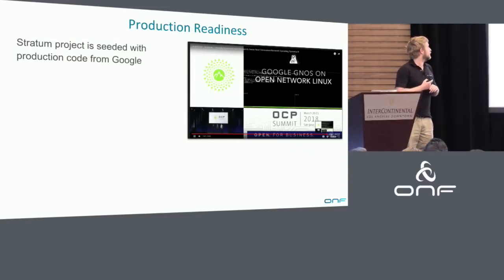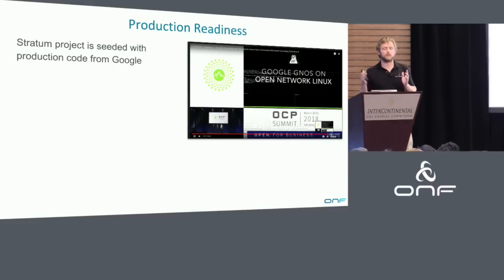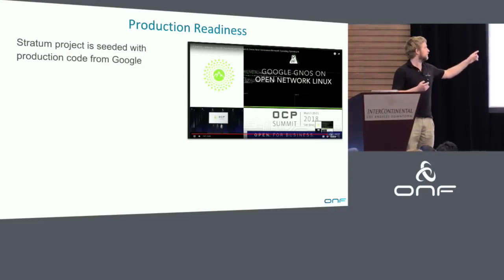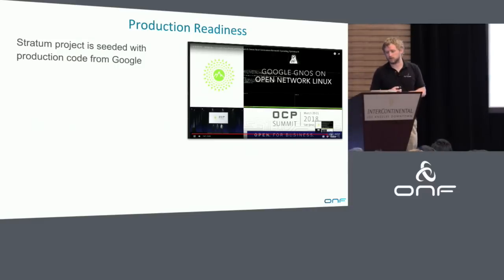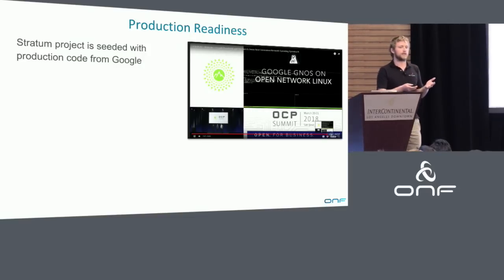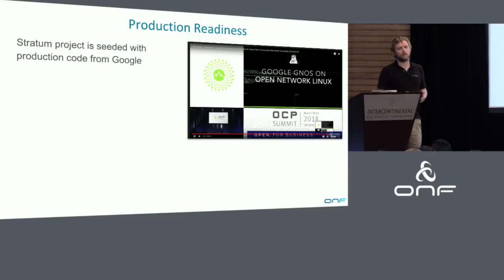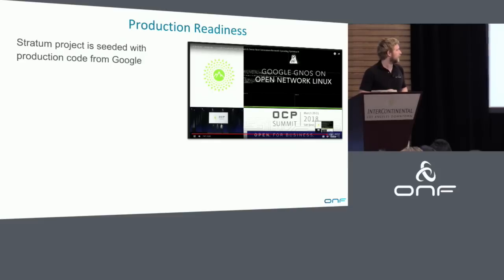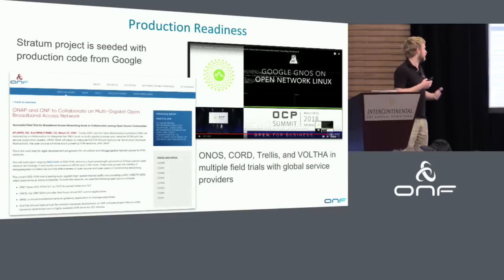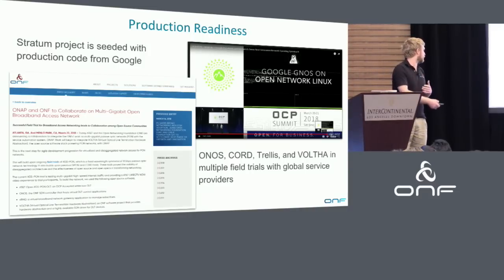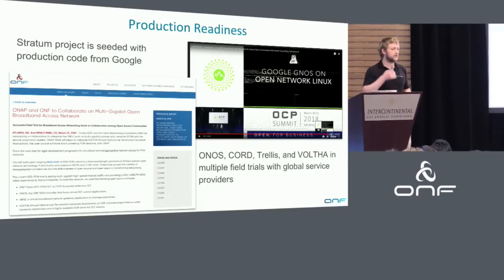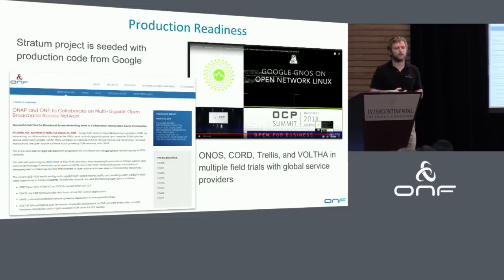The last thing I'll touch on is production readiness. Stratum is a project seeded by production code from Google. If you were at OCP last week, Google did a demo using Stratum on top of their production environment on an undisclosed switch. We're not starting from scratch - we're starting from a seed code base on a network that's probably one of the largest pure SDN networks in production today. Just last week, AT&T announced a collaboration with ONF to deploy Volta on top of their next-gen PON network, showing a lot of field trials and deployments.